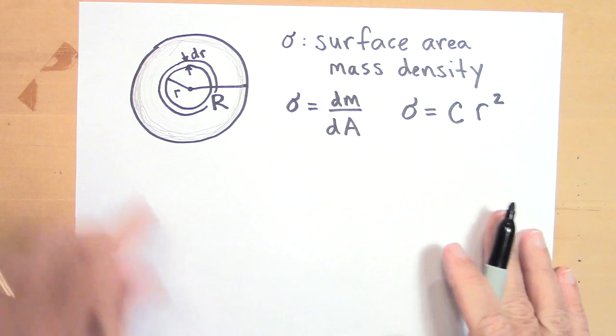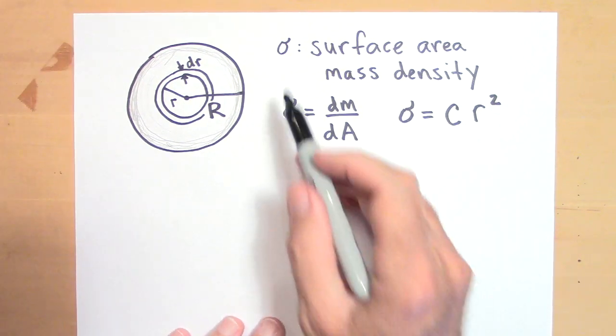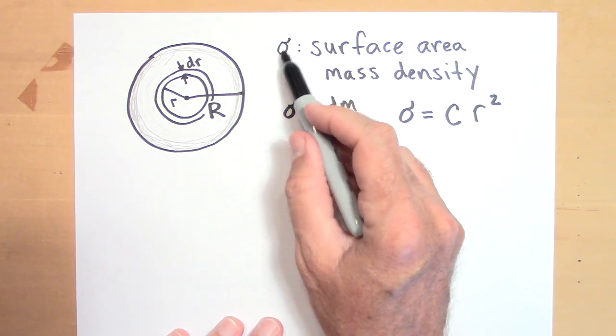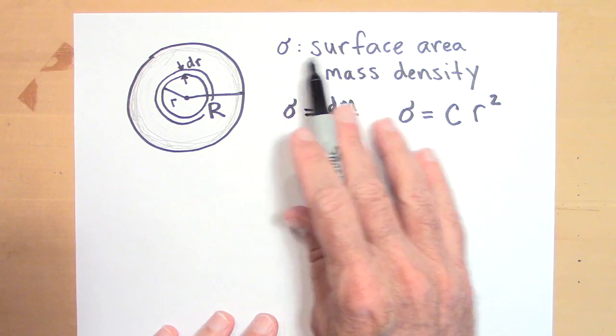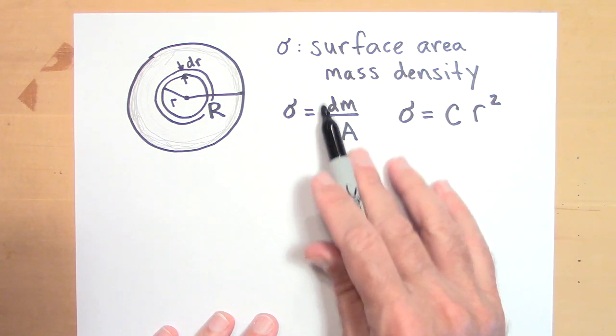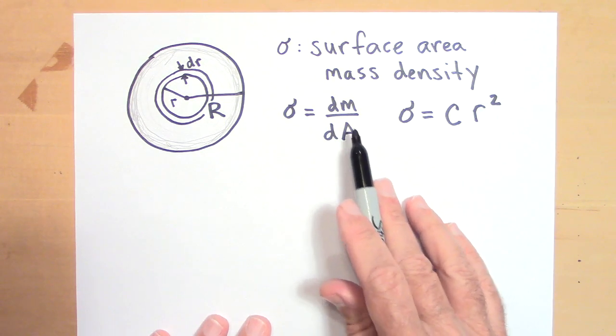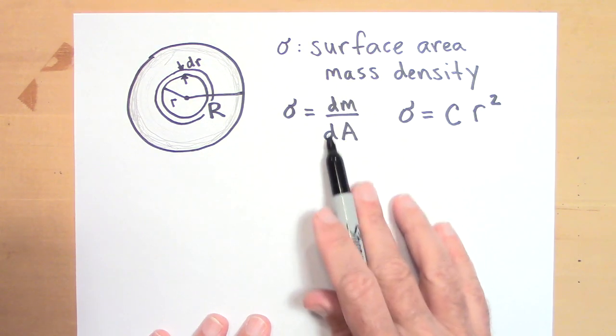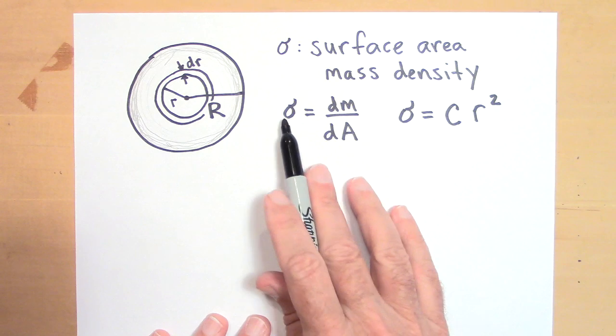we're going to use the term sigma. This is a lowercase sigma here. This little curly Q, that's sigma, is surface area mass density. So that's the mass per area for a given area. That's sigma.